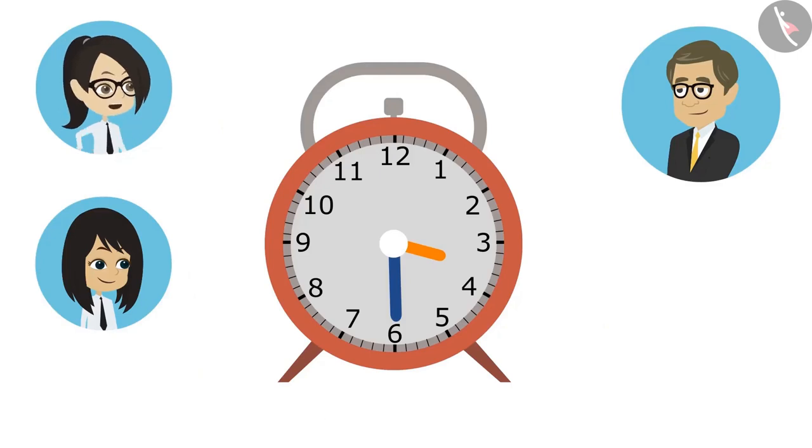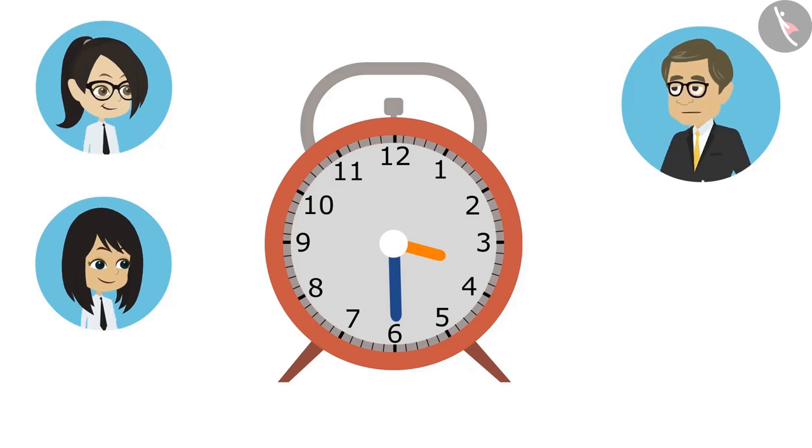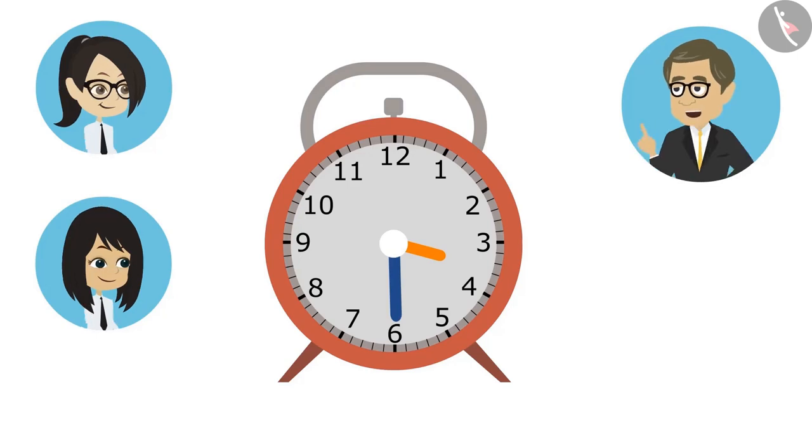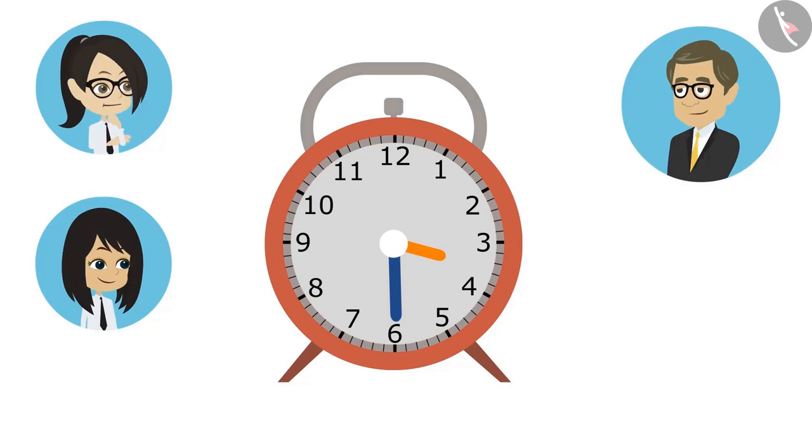Because the hour hand is not at 3, it has moved ahead of 3. Yes, Vandana. If the hour hand was at 3, the time would have been 3. But because it is ahead of 3, it means that it is more than 3 o'clock. And it is behind 4, which means that it is not 4 o'clock as yet. Well, sir, now it is understood that if the hour hand moves ahead of any number, then how we need to read it.